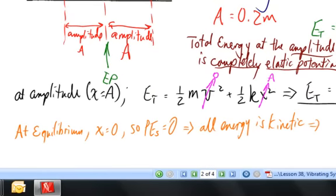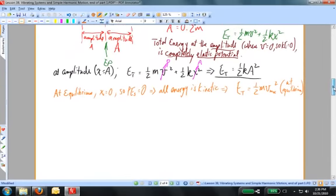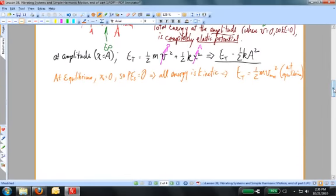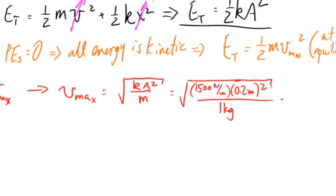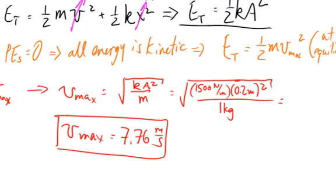At the equilibrium position, all the energy is kinetic: one half kA squared equals one half mv squared. Setting those equal and solving for the speed, I substitute the numbers — k = 1500 N/m, A = 0.2 m, m = 1 kg — and find that the object travels just under 7.8 meters per second when it passes through the equilibrium position. That's part A.